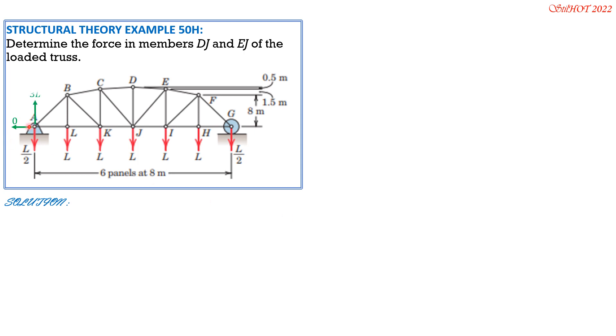So horizontal 0 at A, then that's 3L, that is also 3L. There's no need to set moment at A equals 0, then solve for the reactions because of symmetry, geometric symmetry of the truss plus the loadings.